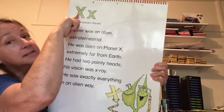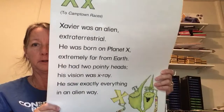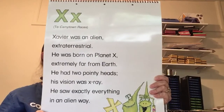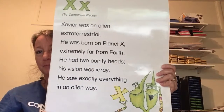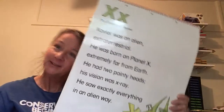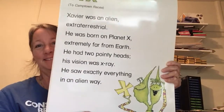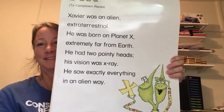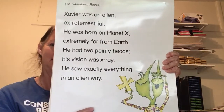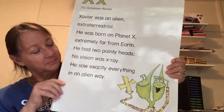There's the uppercase. There's the lowercase. If you can find some X's, let's go ahead. He saw exactly everything in an alien way. Xavier was an alien, extraterrestrial. He was born on planet X, extremely far from Earth. He had two pointy heads. His vision was X-ray. He saw exactly everything in an alien way.